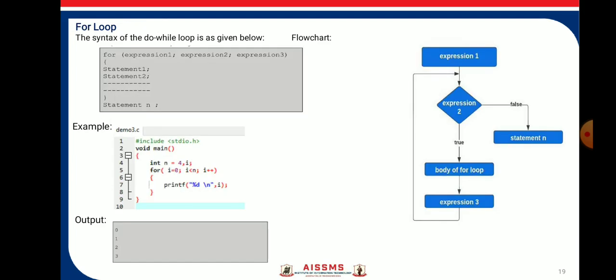Next is the for loop. The for loop is also known as the pre-test loop. Its syntax has three expressions: expression one is initialization, expression two is the conditional expression, and expression three is for updation. Variables can be initialized in the for statement itself.